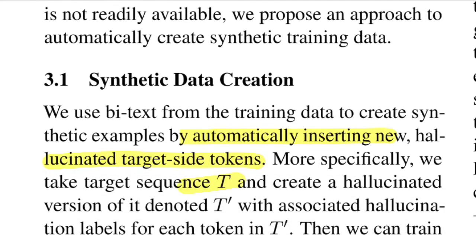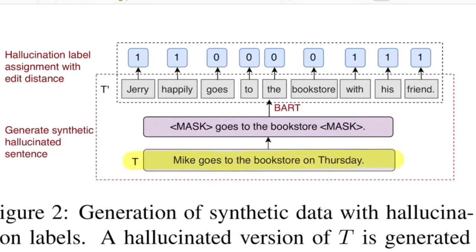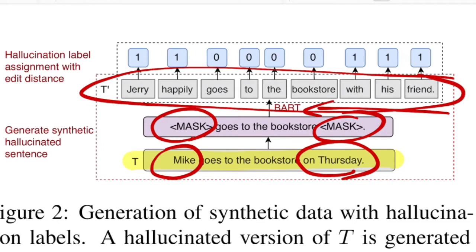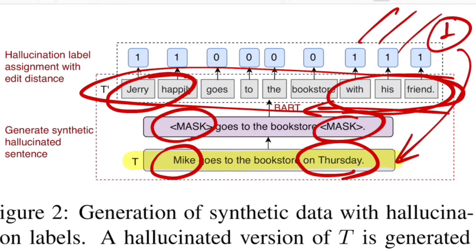Let's say the target sequence is T and after synthetic generation you get a hallucinated version T'. They randomly mask a couple of words or phrases — for example, masking 'on Thursday' and 'Mike' — then pass it through the pre-trained BART model, which is a sequence-to-sequence model trained on a denoising objective (I have a paper explanation for BART linked in the i-button). BART fills the masked tokens; for instance, it might generate 'Jerry happily goes to the bookstore with his friend.' The filled-in spans are labeled 1 (hallucinated) and everything copied directly from the original target is labeled 0.